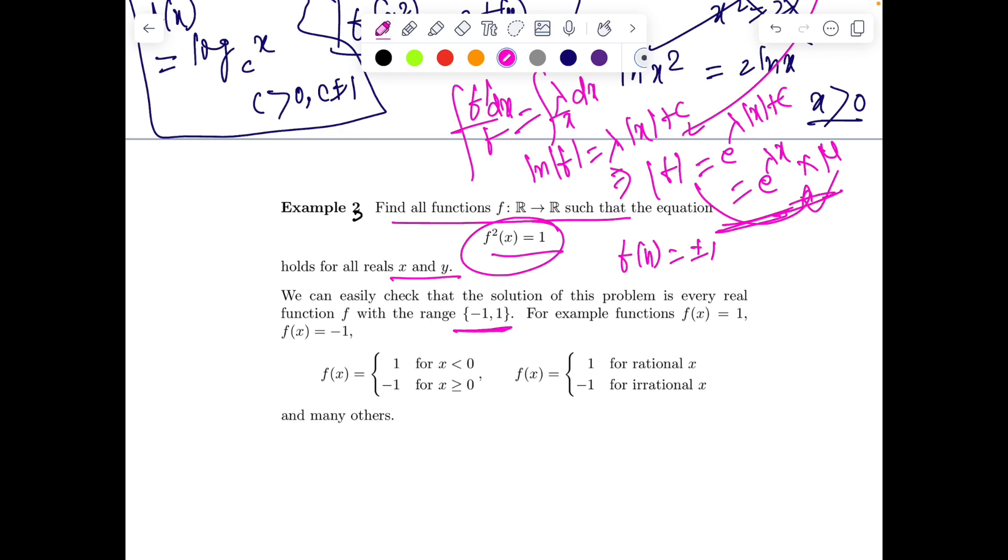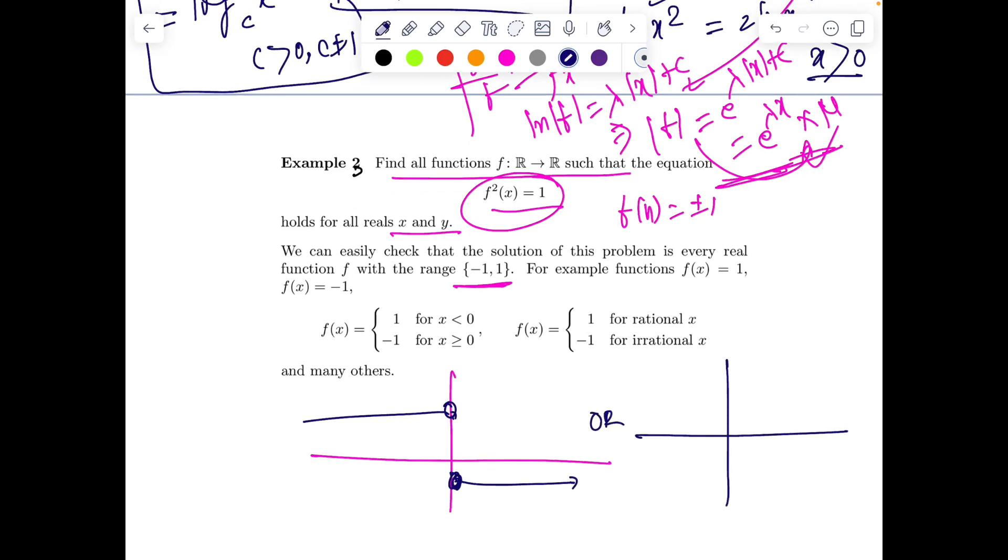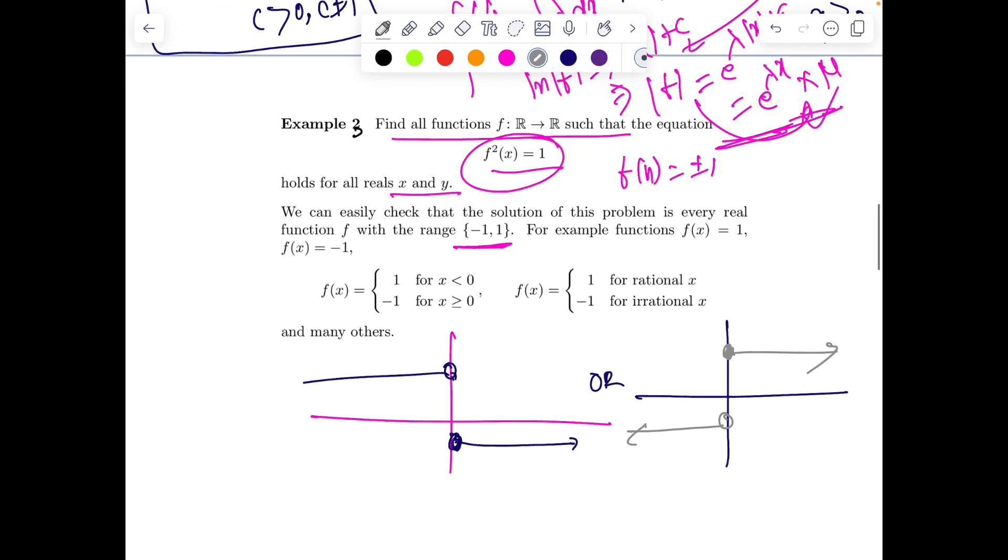I can define a function like f(x) = 1 for x < 0 and f(x) = -1 for x ≥ 0. Or I can define it the other way. But this is not the only solution available in most textbooks. We can have multiple answers. We can have f(x) = 1 for rational and f(x) = -1 for irrational.